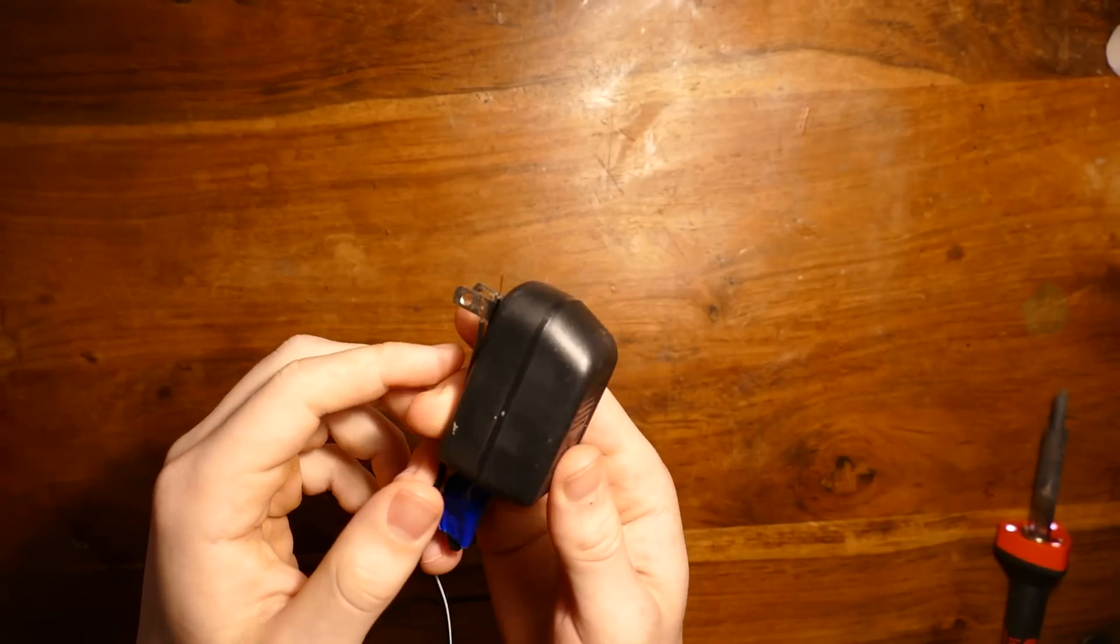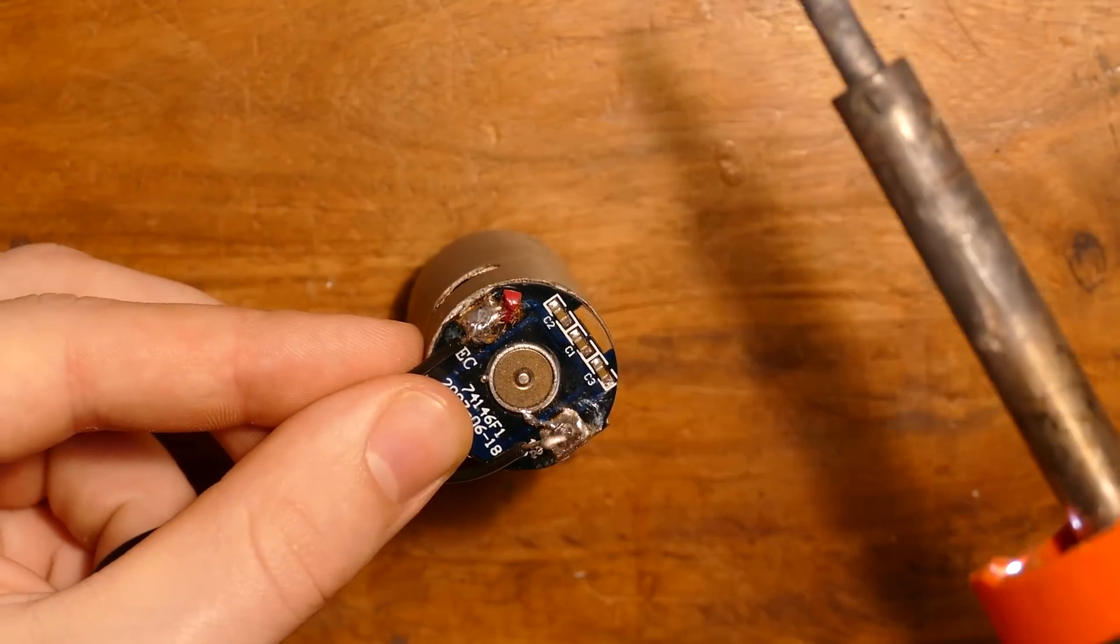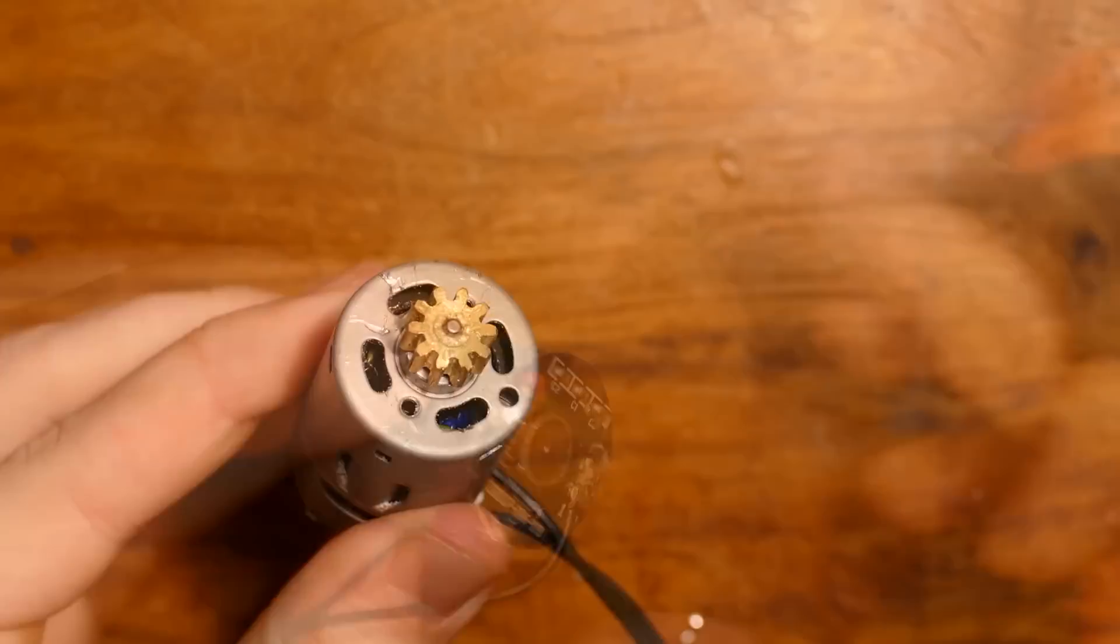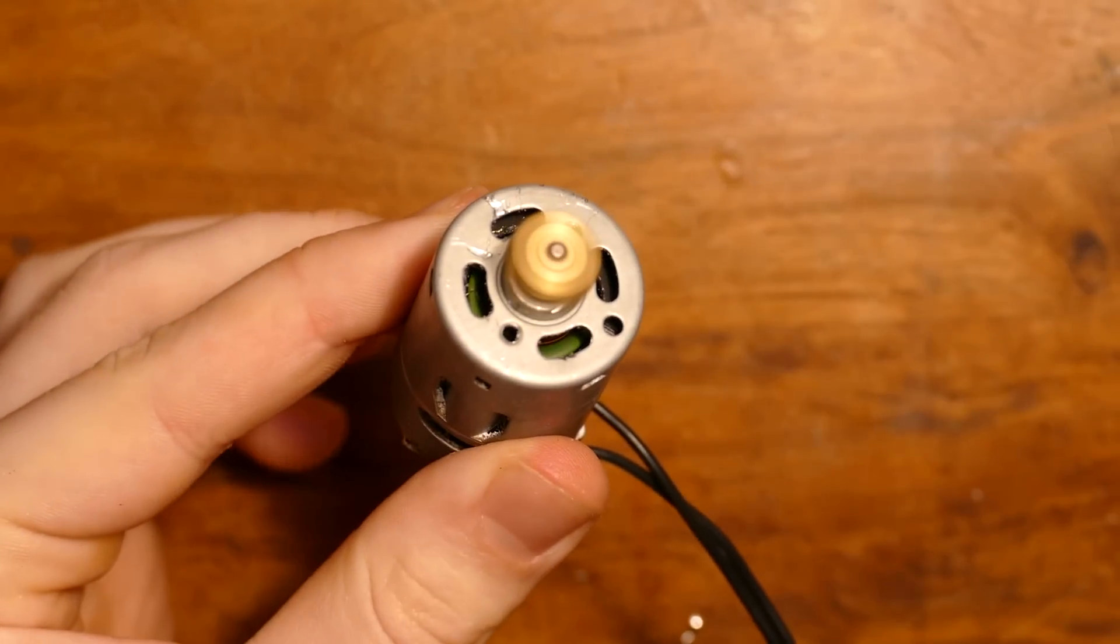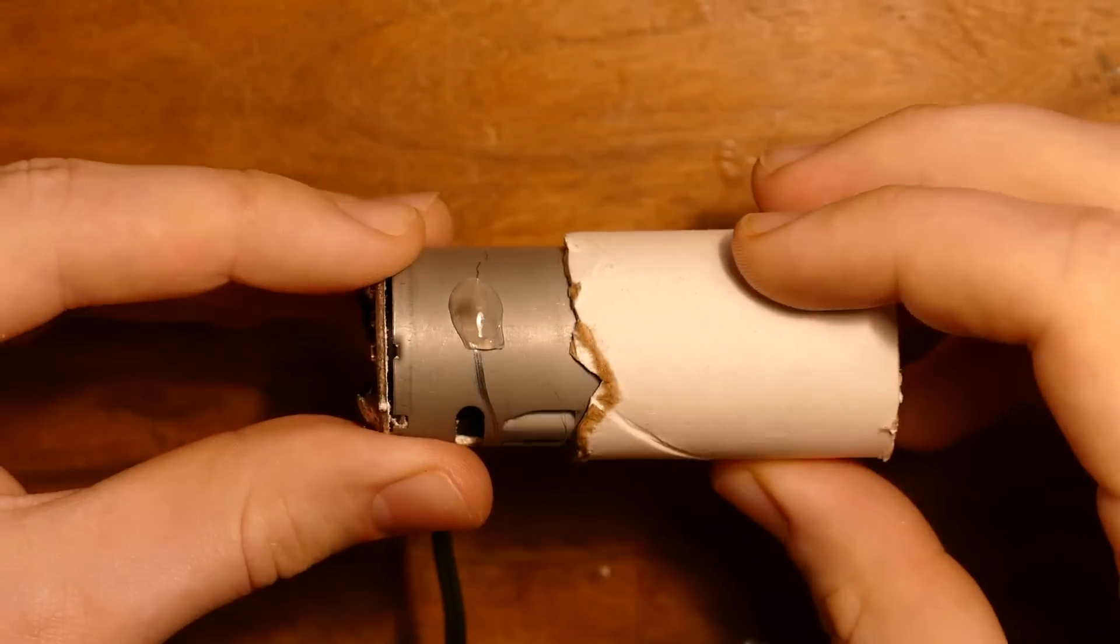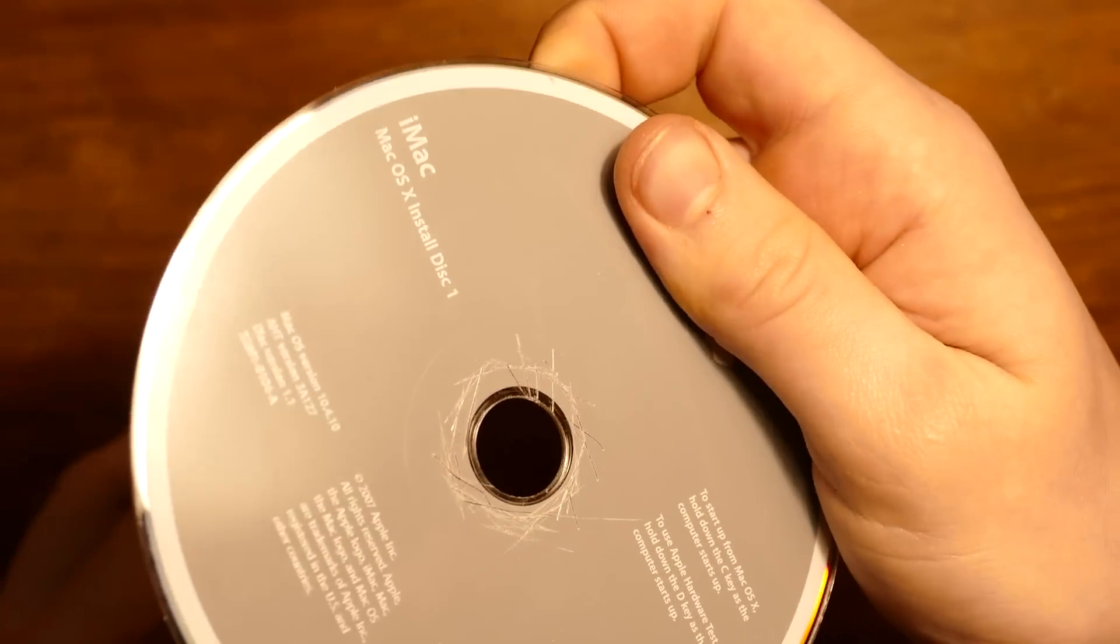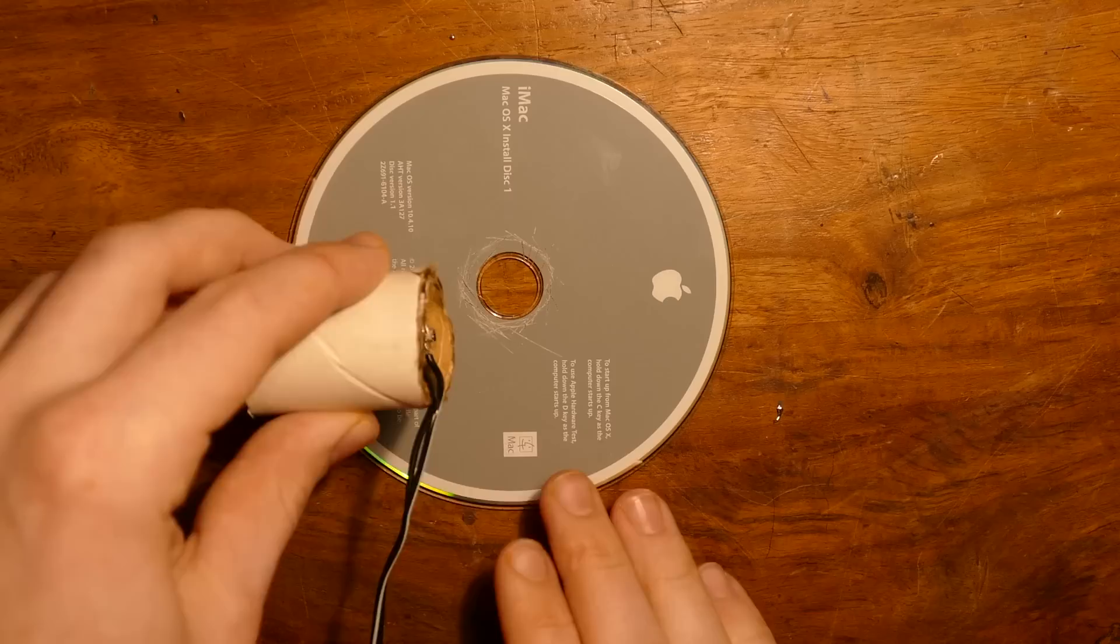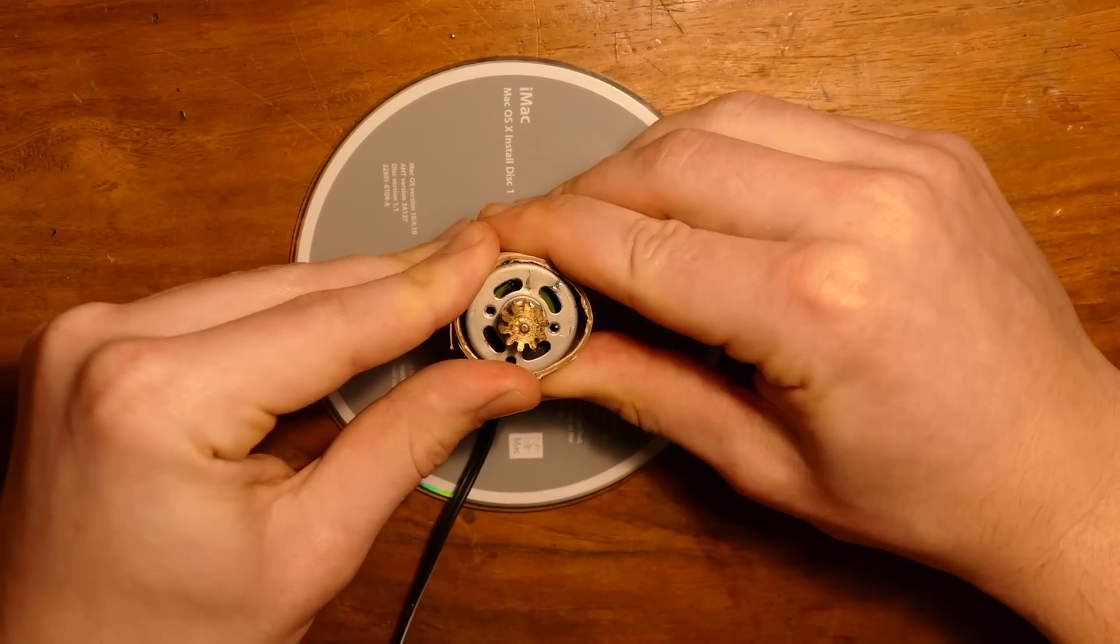The first step is to solder the two wires from your DC power brick to the motor. You can also tape the wires if you want. When you plug in the brick, the motor should turn on. Next slip the tube over the motor and scratch up the middle of one of the CDs. Now put some super glue on the end of the tube and glue it to the middle of the CD, like this.